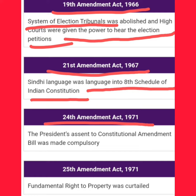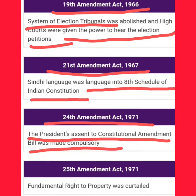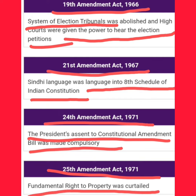24th Constitutional Amendment Act 1971: the President's assent to a constitutional amendment bill was made compulsory, and the fundamental right to property was curtailed.